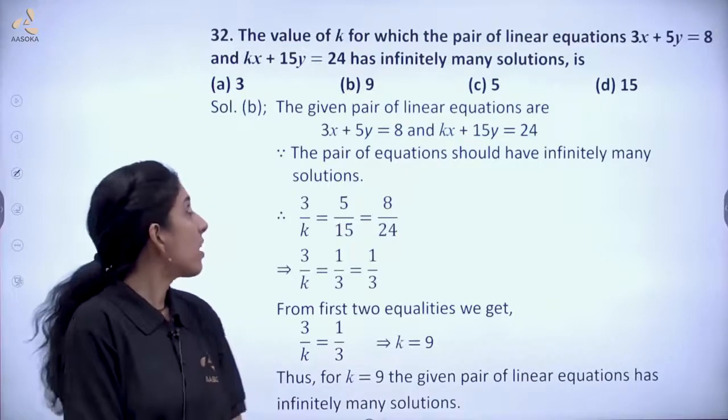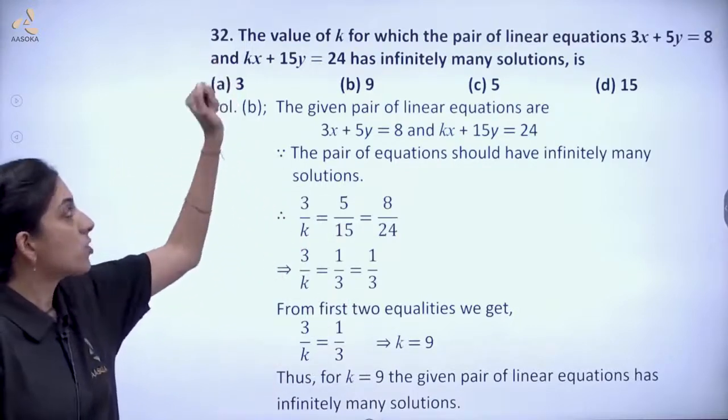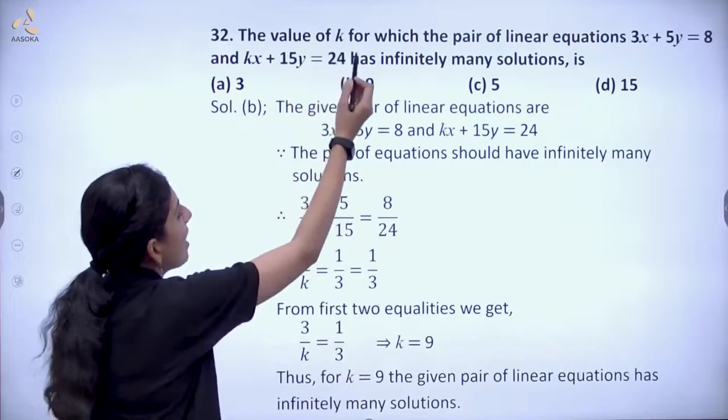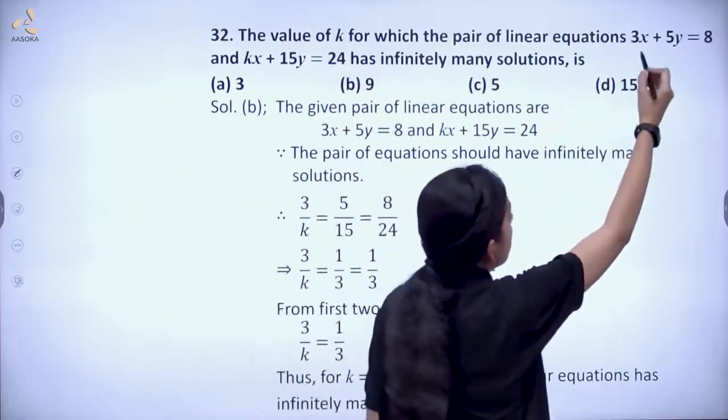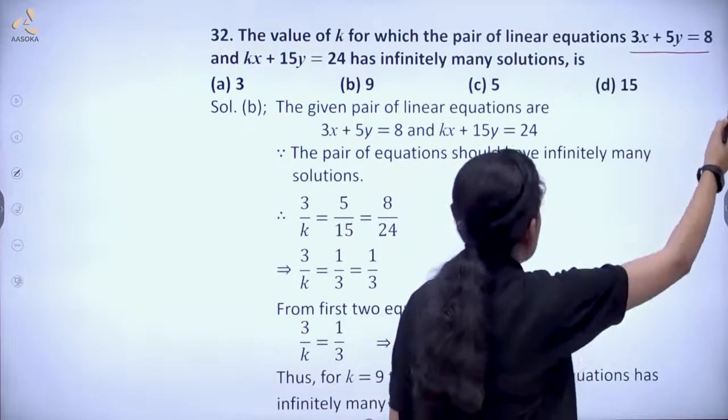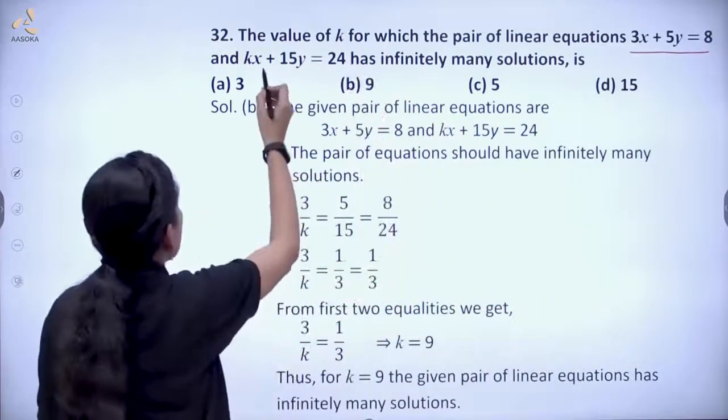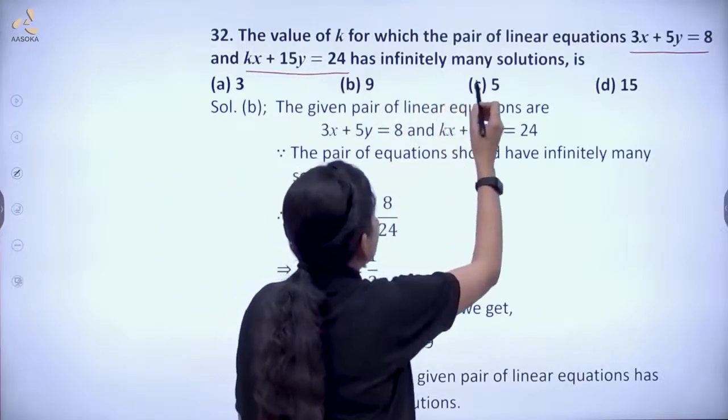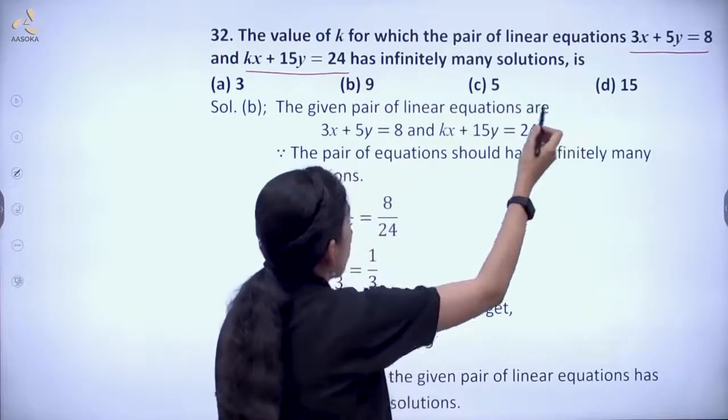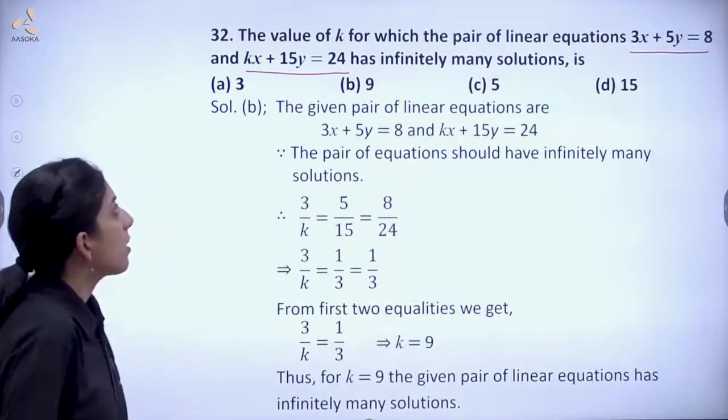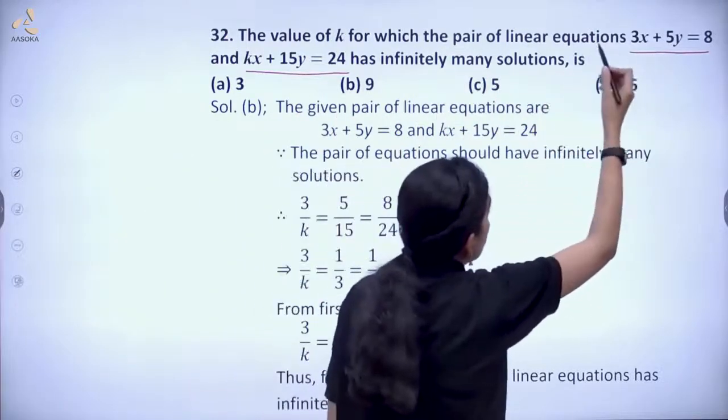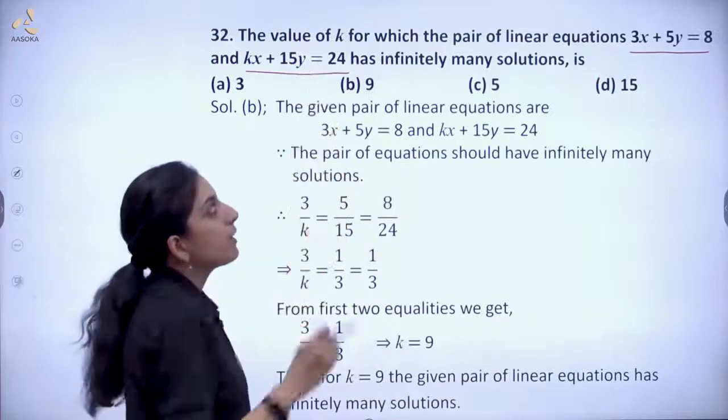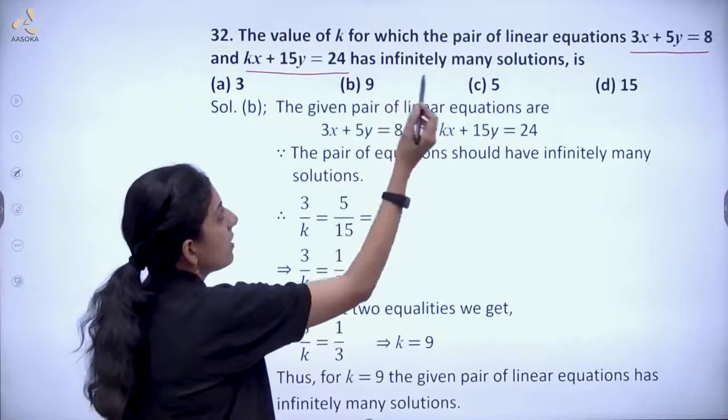Hello students, we are now on question 32, which states: the value of k for which the pair of linear equations 3x + 5y = 8 and kx + 15y = 24 has infinitely many solutions. So here two equations are given, we have to find out the value of k for which the linear equations have infinitely many solutions.